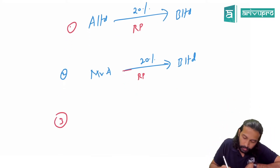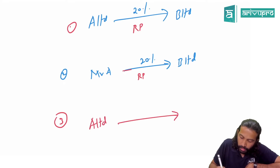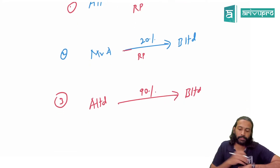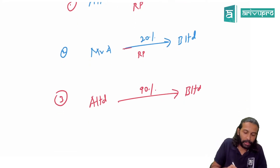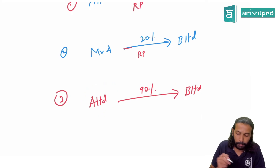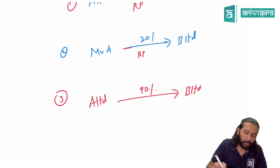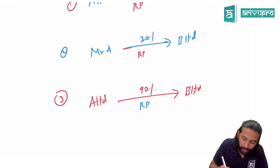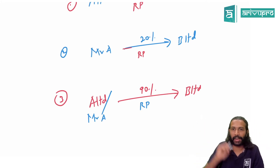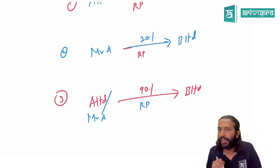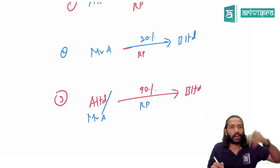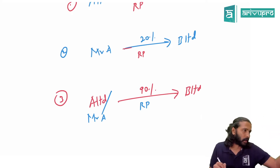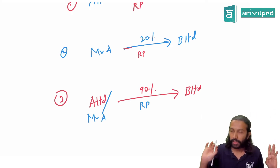Case 3: A Limited owns 90% shares of B Limited — are they related parties? Yes, because A Limited controls B Limited. And whether it's A Limited or Mr. X as the shareholder, it could be a company, an individual, a partnership firm, or any sort of entity — any combination works.